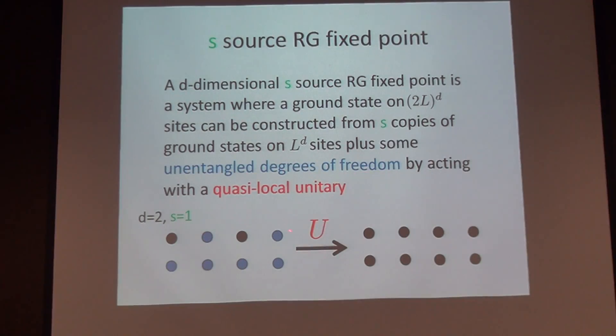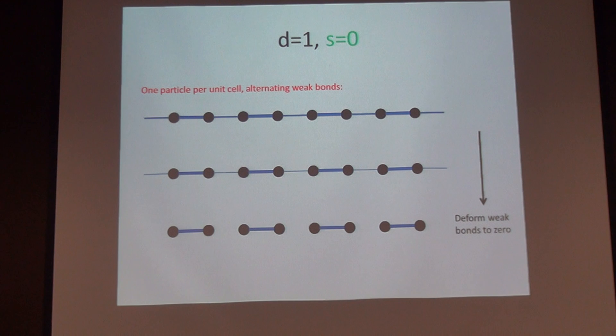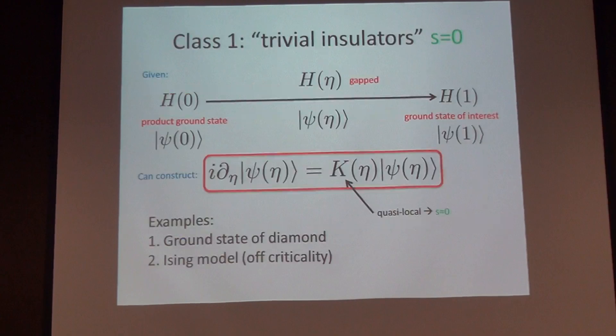But as I said, the key thing is to construct this unitary transformation. Let's go back to the trivial case where I have an insulator with one particle per unit cell and some alternating weak and strong bonds. I wanted to deform these bonds to zero, and there's an obvious guess for what the unitary is: it's just adiabatic evolution. That's roughly going to give me the right ground state as far as local properties are concerned, but if you want the true many-body wave function to have unit overlap before and after, you need to do a little bit better.